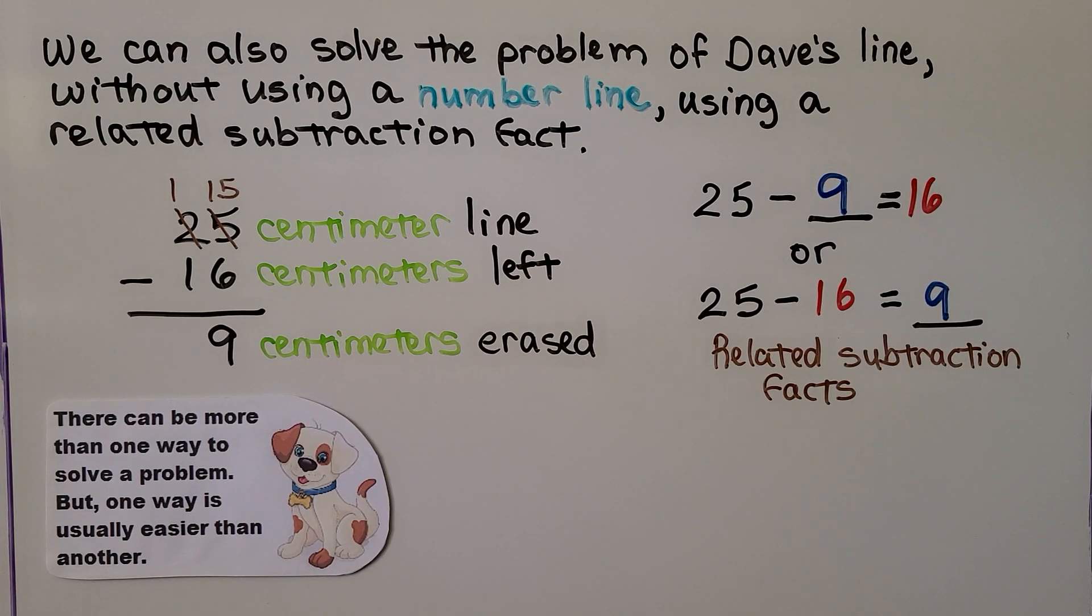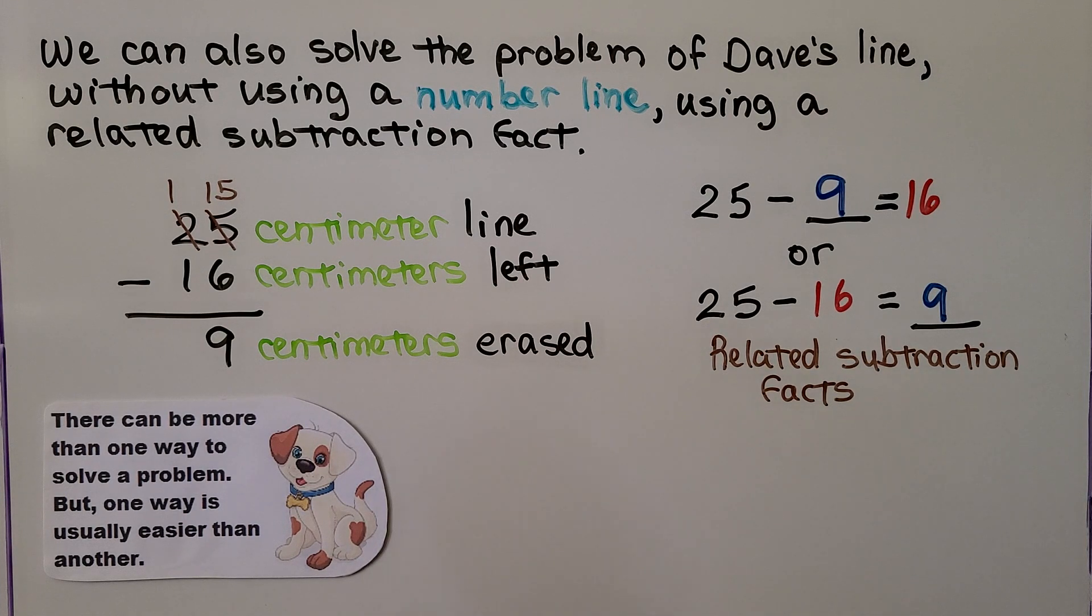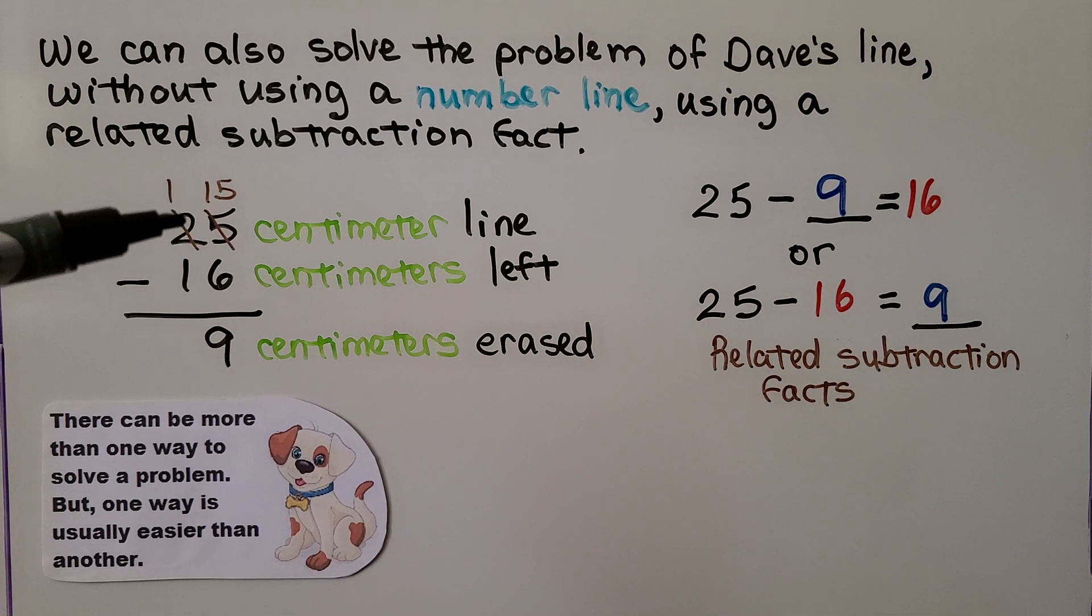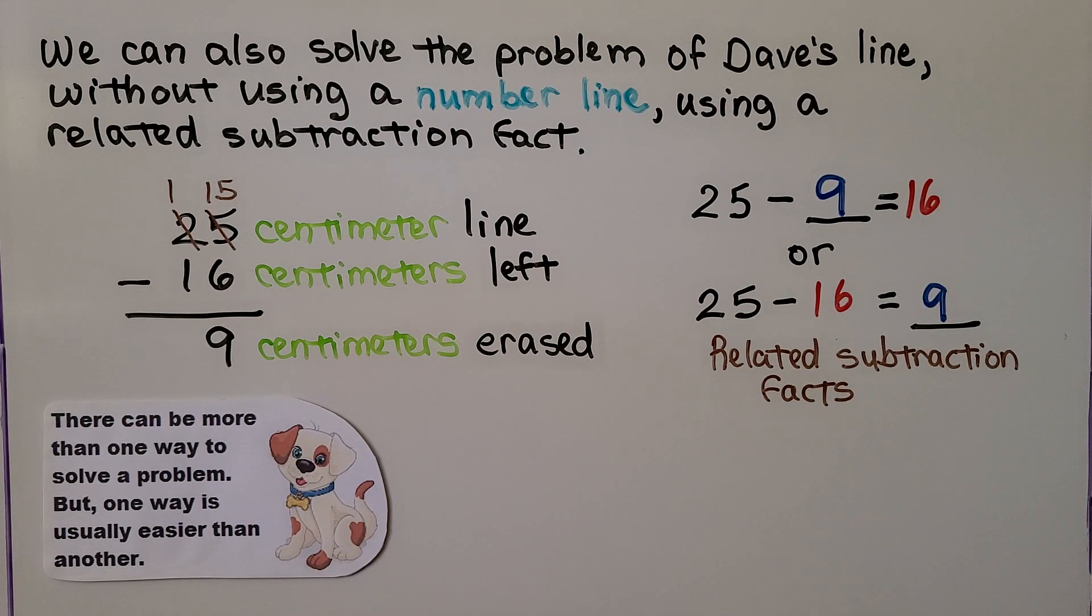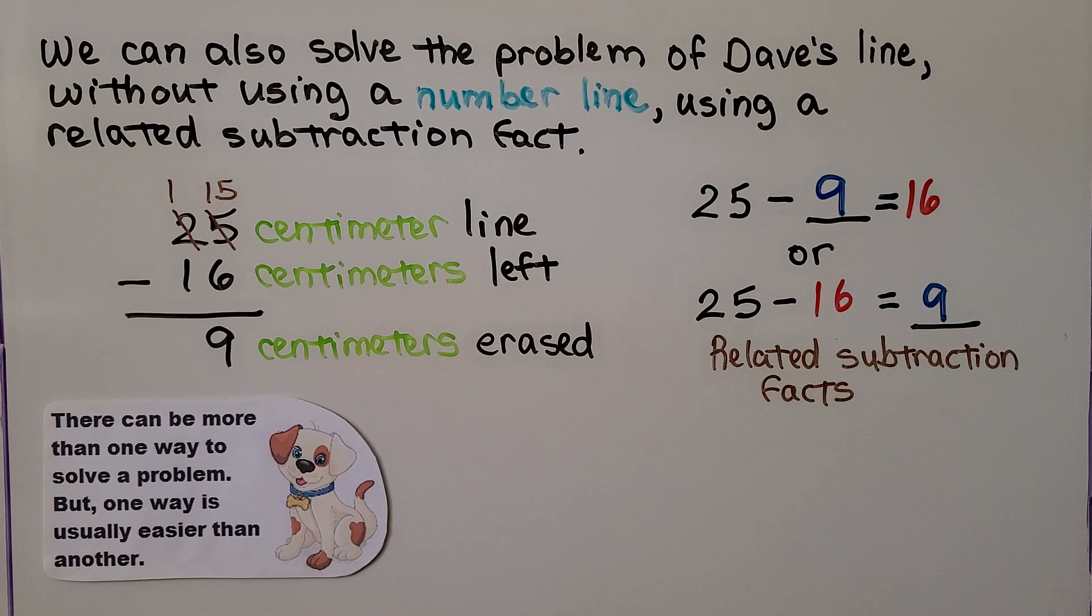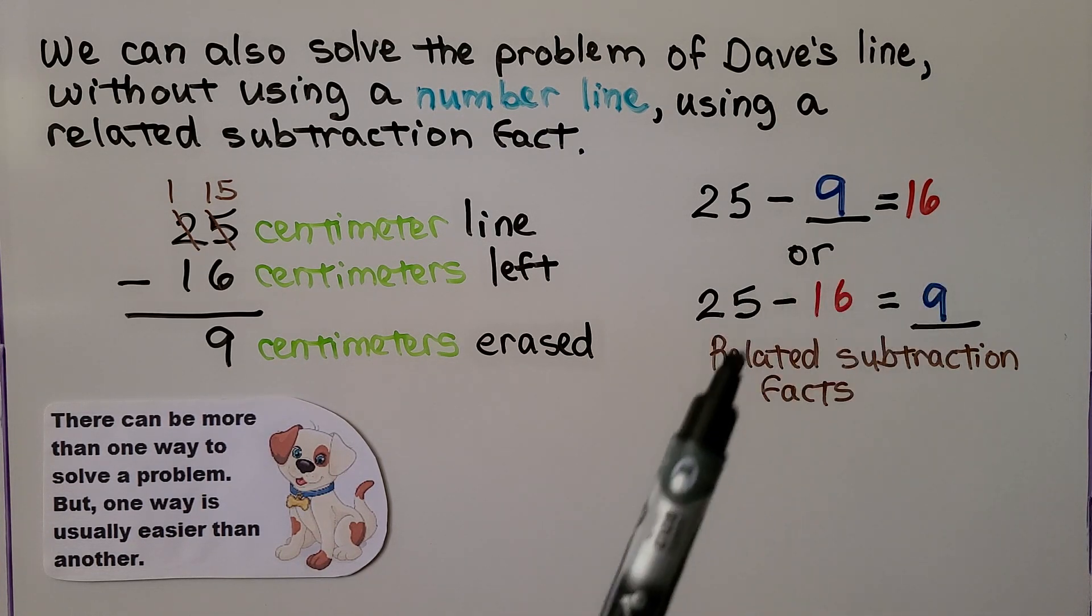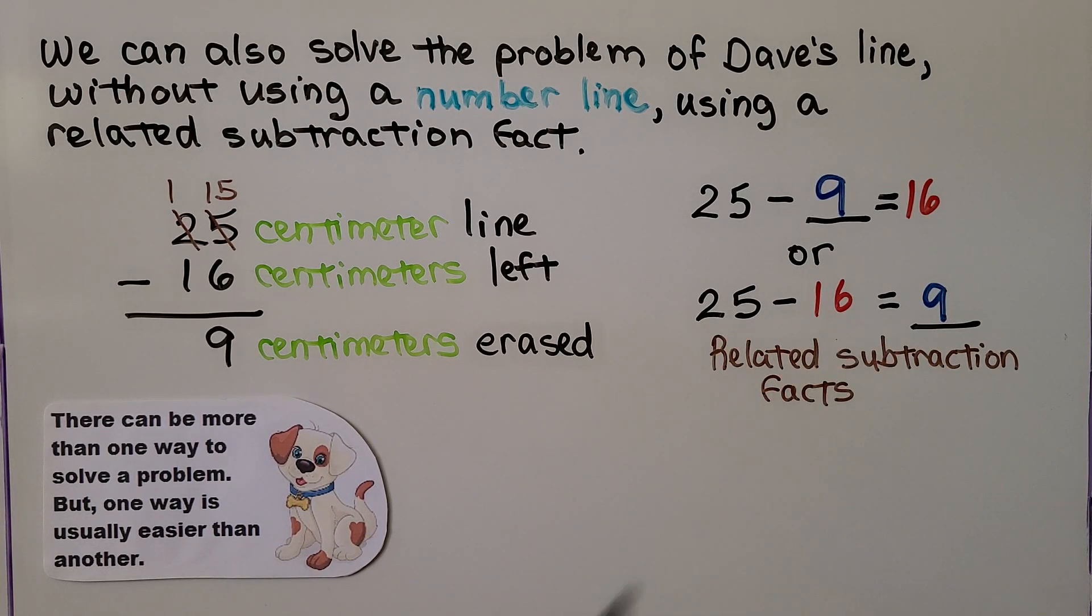We could also solve the problem of Dave's line without using a number line using a related subtraction fact. We have a 25 centimeter line, and there was 16 centimeters left. That means 9 centimeters must have been erased. And 25 minus 9 is equal to 16, or 25 minus 16 is equal to 9. Those are related subtraction facts. They use the same three amounts, a 25, a 9, and a 16. A 25, a 9, and a 16. So there can be more than one way to solve a problem, but one way is usually easier than the other.